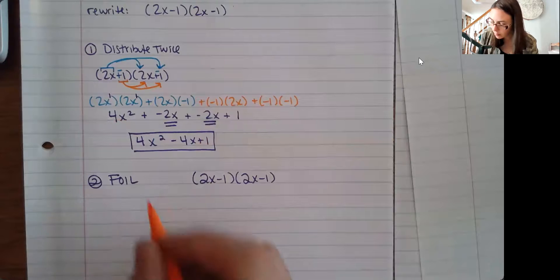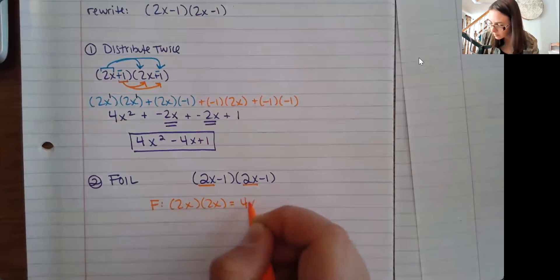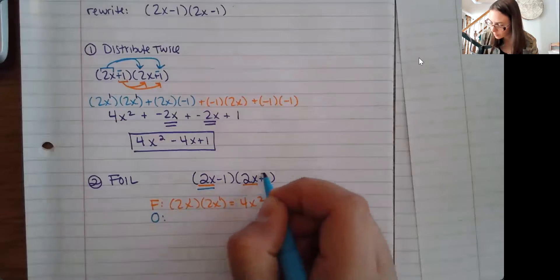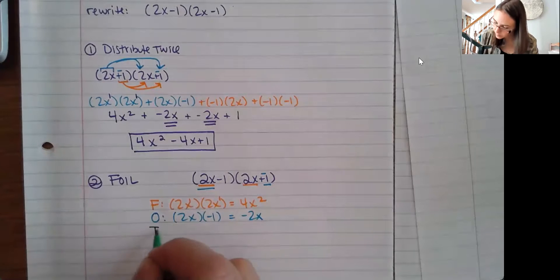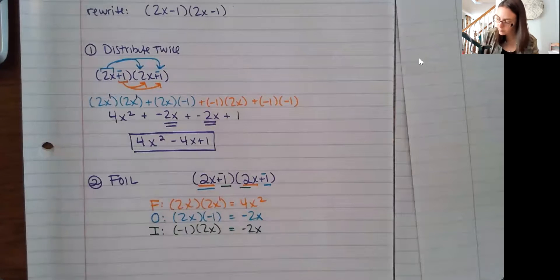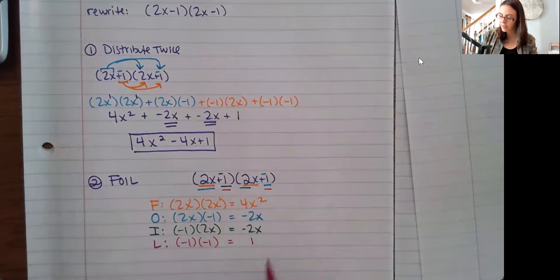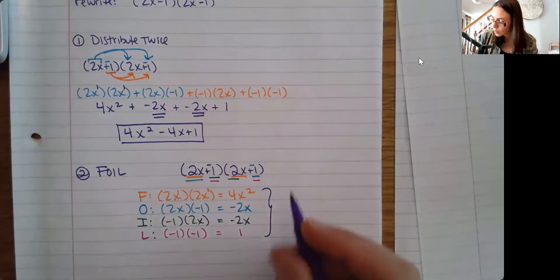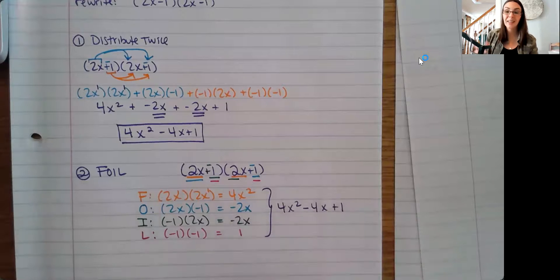If you prefer to think of this as FOIL: the first terms are 2x and 2x; the outer terms are 2x and negative 1; the inner terms are negative 1 and 2x; and the last terms are negative 1 and negative 1. Putting it all together: 4x squared, then negative 2x plus negative 2x gives negative 4x, then plus 1. So the final answer is 4x squared minus 4x plus 1.